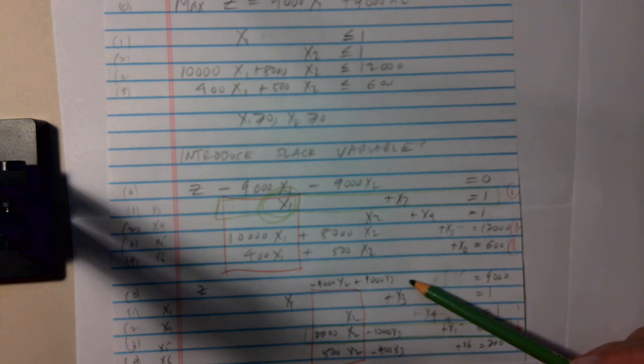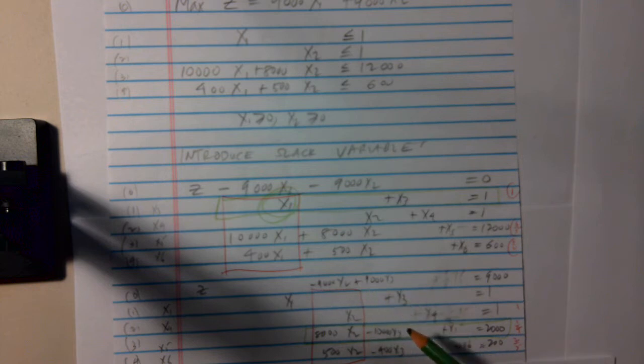Now, I look at the objective function equation, and there's only one negative coefficient for X2. And that means if I increase X2, I increase the value of Z. And how much can I increase X2? So in this equation, if I look, I can increase X2 to 1, but no more, because if X2 were bigger than 1, X4 would be negative. In this equation, I can increase X2 up until 8,000X2 is 2,000, or X2 is at most 2,000 over 8,000. That is, the ratio of the right-hand side to the coefficient of X2 is one fourth. And in equation 4, the ratio of the coefficient of the right-hand side to the coefficient of X2 is 2 over 5. So these ratios are 1, one fourth, and 2 fifths, and the smallest is one fourth.